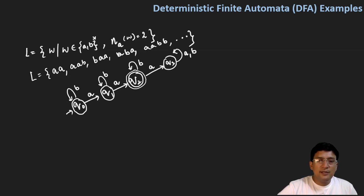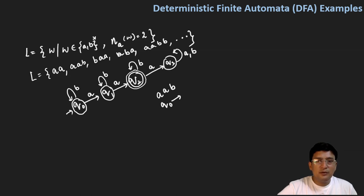Let's take some strings and check if they get accepted or rejected. Let's take the string AAB. From q0, on A you move to q1. Then from q1, on A you move to q2. And with B in the q2 state, you remain at q2, and the string gets accepted.